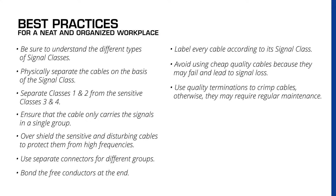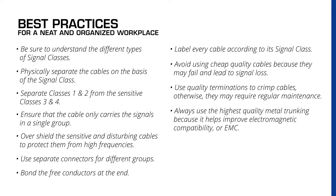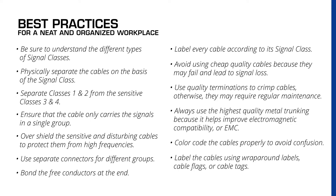Avoid using cheap quality cables because they may fail and lead to signal loss. Use quality terminations to crimp cables, otherwise they may require regular maintenance. Always use the highest quality metal trunking because it helps improve electromagnetic compatibility, or EMC. Color code the cables properly to avoid confusion, and finally label the cables using wraparound labels, cable flags, or cable tags.